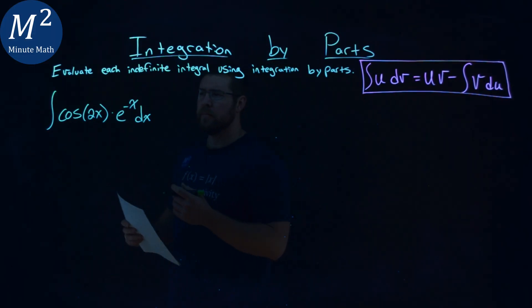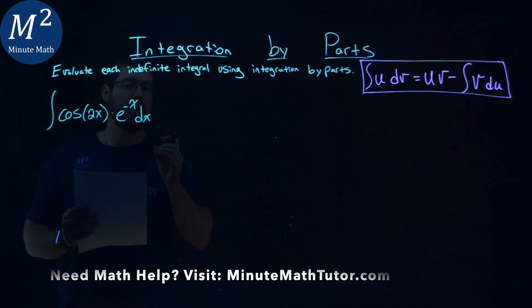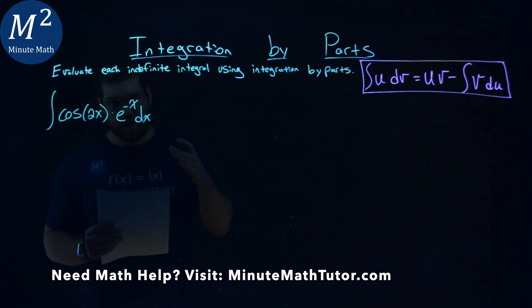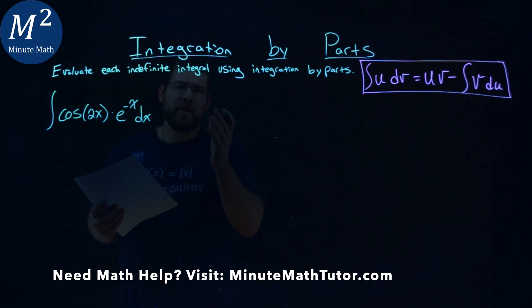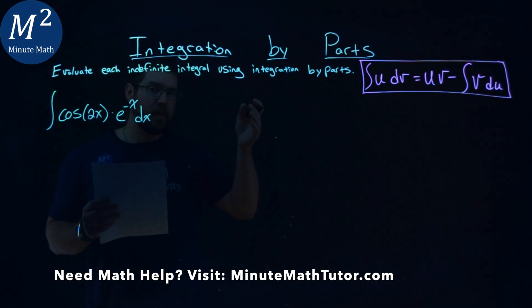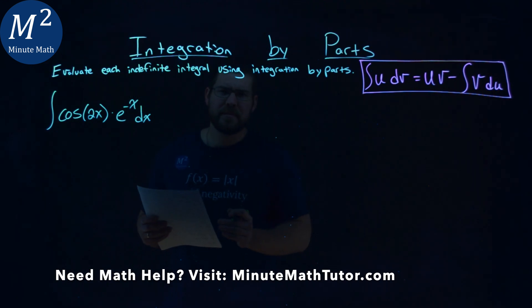We're given this problem right here, the integral of cosine of 2x times e to the negative x power dx, and we have to evaluate this indefinite integral using integration by parts. And this one's a pretty difficult one.